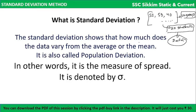Standard deviation shows how much the data varies from the average or the mean of that data. It is also called population deviation. Using this data, we first find the mean — that is, the average. The average is the sum of items divided by the number of items.